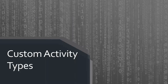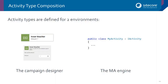The other piece — specific to marketing automation — is custom activity types. A custom activity is made up of two parts: the campaign designer and the actual activity implementation. The campaign designer is what goes on the CM — that's the UI the marketer will see, consisting of all front-end code and items. The actual activity implementation is pure C# — an implementation of IActivity.